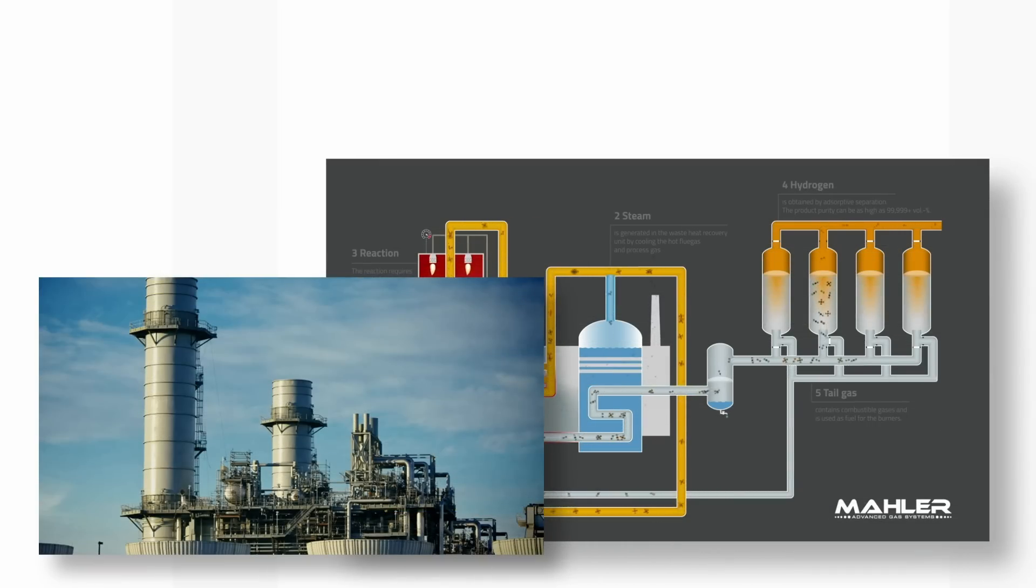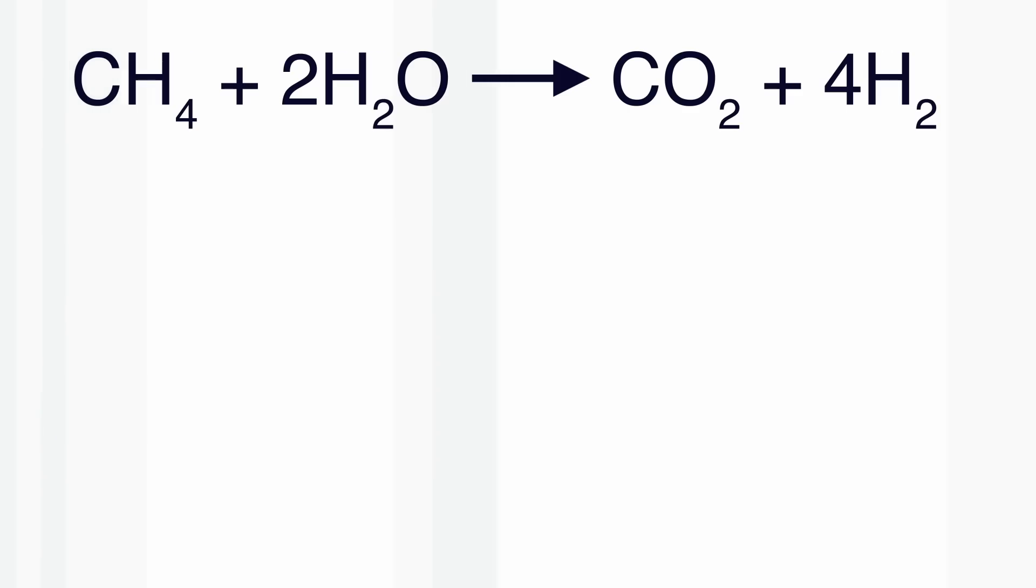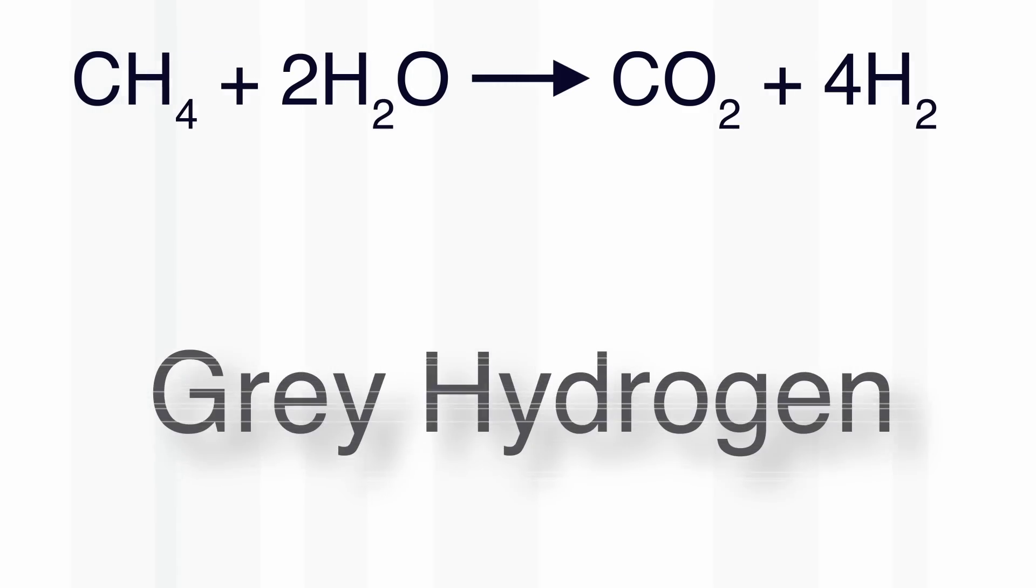Traditionally, the industrial production of hydrogen is from methane reacting with steam, and it produces hydrogen and carbon dioxide. So from the point of view of climate change, it's very bad because the CO2 is released. That is called grey hydrogen.